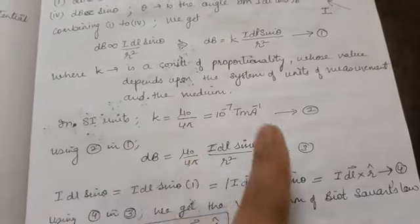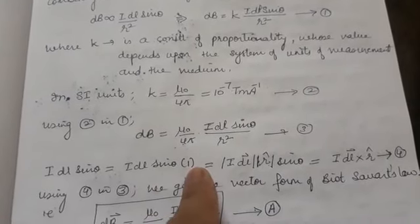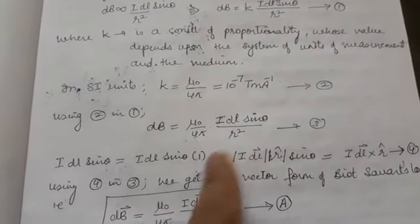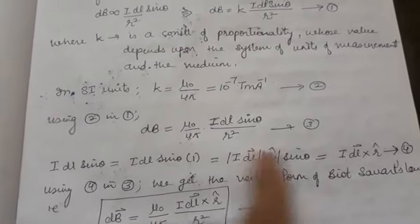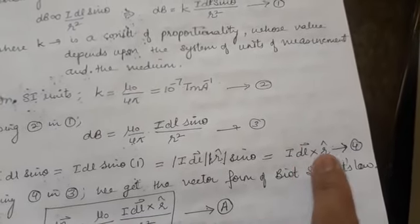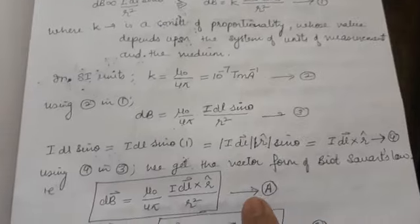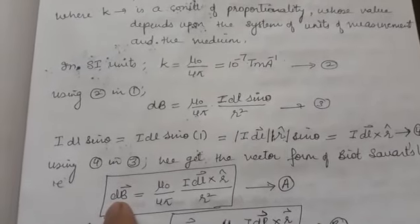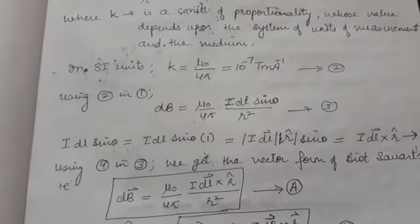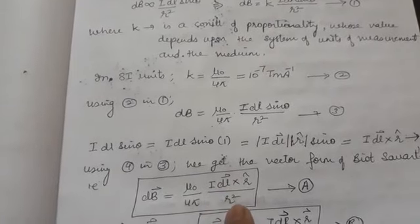Using this value of K in equation number one, I will get the equation for dB. Here DL sin theta multiplied by one gives us the expression, where I DL is the magnitude of the IDL vector, and this can be converted into the cross product IDL vector cross R-cap. Using this fourth equation and the third equation, I get equation A — the magnetic field at point P due to the small current element DL. To find the magnetic field due to the whole conductor, integrate both sides to get total B.